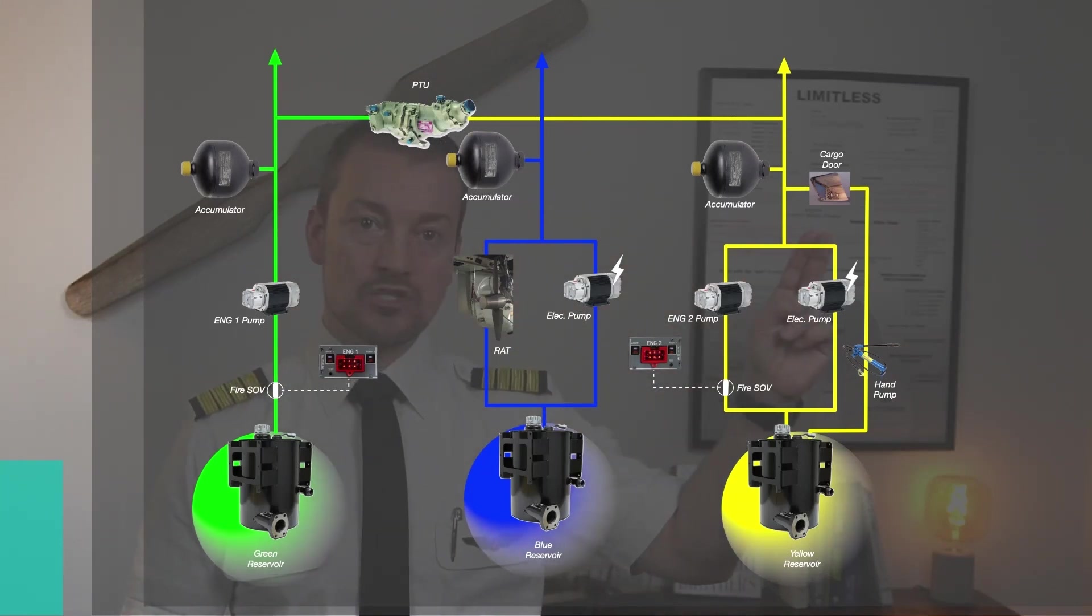Each system here has its own accumulator, its own reservoir and the PTU allows the green system and the yellow system to pressurize each other.